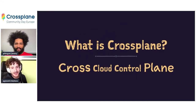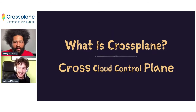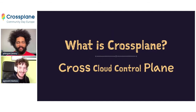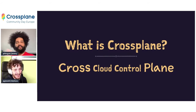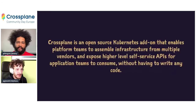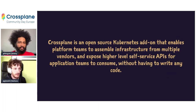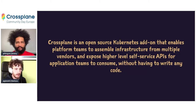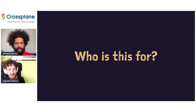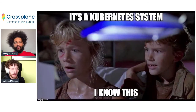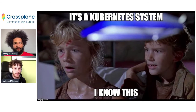What is Crossplane? It's right there in the name. Crossplane is meant to be a cross-cloud control plane — for folks who are wanting to do multi-cloud. The description is: an open-source Kubernetes add-on that enables platform teams to assemble infrastructure from multiple vendors using high-level service APIs for application teams, without having to write any code. Being a Kubernetes add-on, it's a Kubernetes system.